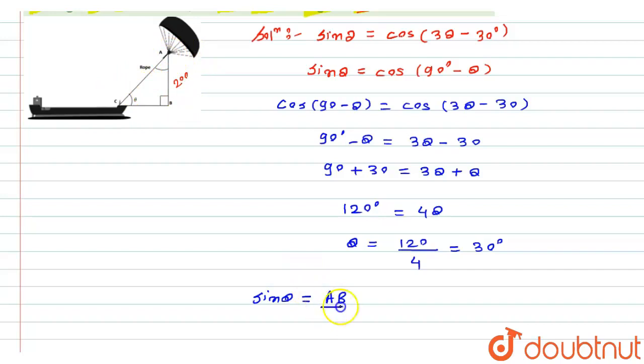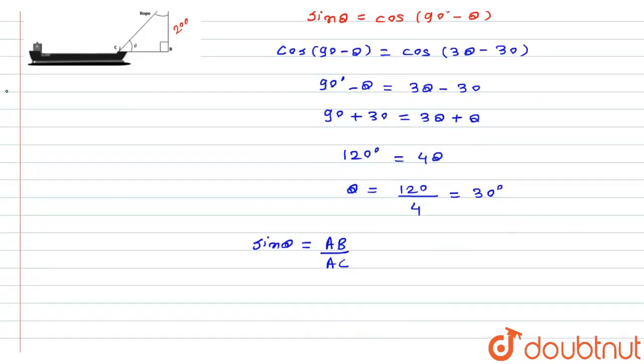Here, sin θ is equal to opposite over hypotenuse, that is AB divided by AC. Putting the values, this expression becomes sin 30° = 200/AC. So sin 30° = 1/2 = 200/AC.